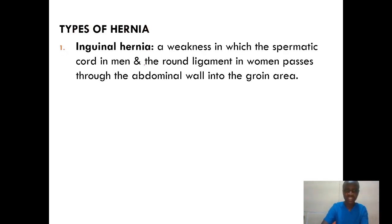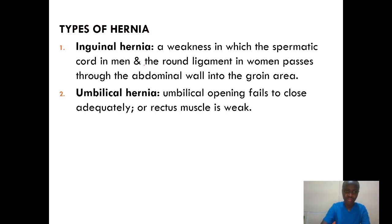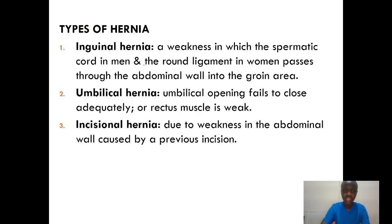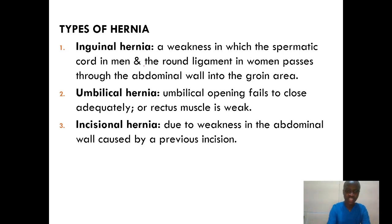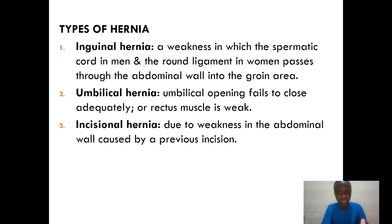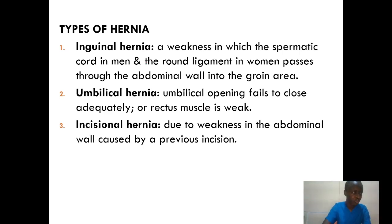What are the types of hernia? We have inguinal hernia, umbilical hernia, and incisional hernia. For incisional hernia, it mainly occurs due to weakness in the abdominal wall caused by a previous incision — mainly in people who have undergone some sort of surgery. When we have that weakness in the abdominal wall and protrusion occurs, that becomes incisional hernia.